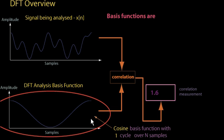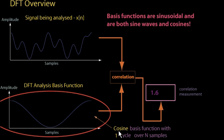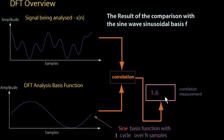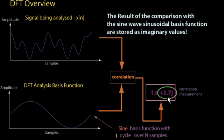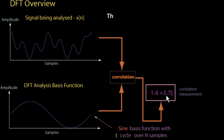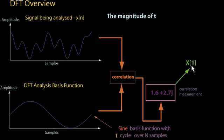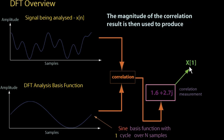The sinusoidal basis functions are both cosine waveforms and sine waveforms. The result of the comparison of the signal being analyzed with the sine wave basis function is stored as a complex number in the correlation measurement. The overall correlation result for both cosine waveforms and sine waveforms is then stored as a complex value in DFT bin 1. It is the magnitude of this complex number, or the correlation result, that is used to produce the magnitude spectrum.